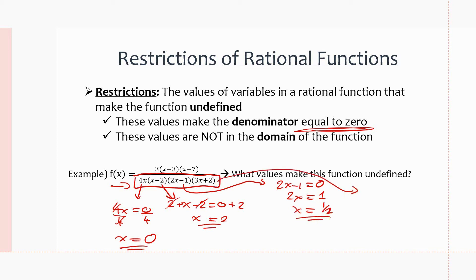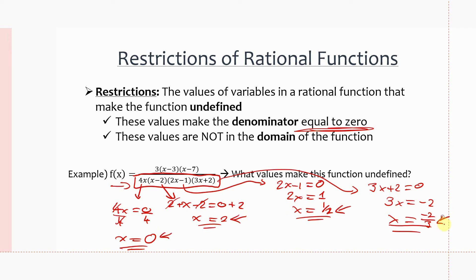Lastly, for 3x + 2 = 0: subtract 2 from each side to get 3x = −2, then divide by 3 to get x = −2/3. So our four restrictions are x = 0, 2, 1/2, and −2/3. In the domain, x can equal any number except x ≠ −2/3, 0, 1/2, or 2.